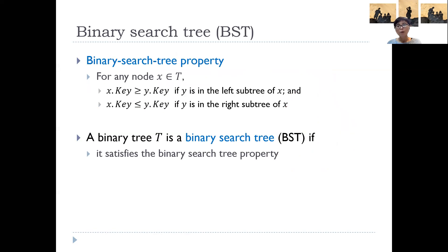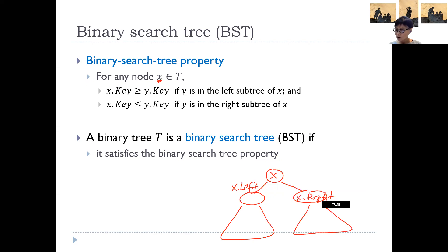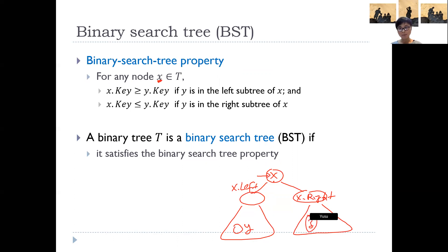What makes a binary tree a binary search tree is if it satisfies the so-called binary search tree property. For every node X, the key at X is bigger than every key in its left subtree, while it is smaller than every key Z in its right subtree. When this holds for every node, we say the tree satisfies the binary search tree property.